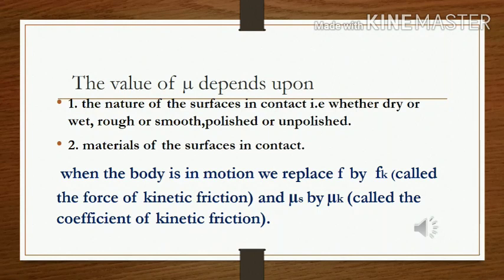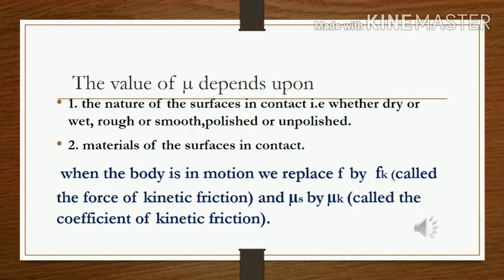The coefficient of limiting friction depends on certain parameters. The first is the nature of the surfaces in contact. If the surface is wet, there will be less friction; if the surface is dry, there will be more friction. Similarly, a rough or unpolished surface produces greater friction, while a smooth, polished, or wet surface produces lesser friction. We experience this in daily life — when there is water on a ground surface, we experience slippage because friction decreases.